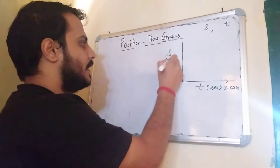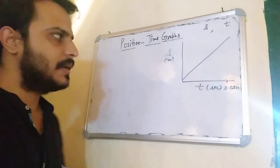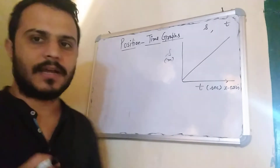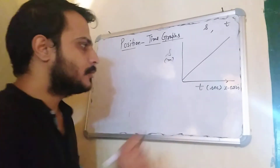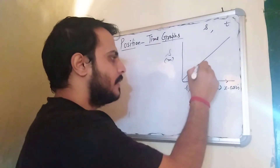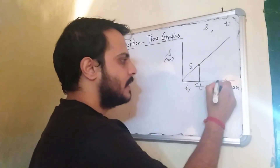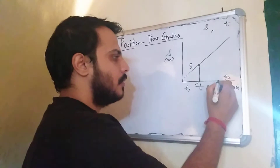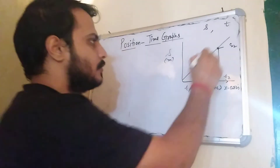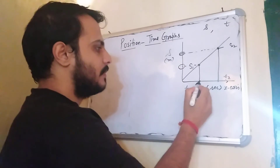We have taken position on the y-axis, in meters. Now I take two instants: T1, at which the body's position is S1, and a little bit later, instant T2, at which the body's position is S2. So S2 and S1 are plotted on the graph at their corresponding time instants T2 and T1.